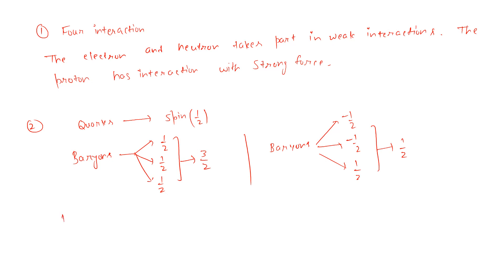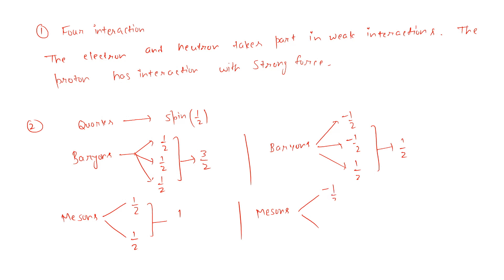For mesons, we know that a meson consists of two quarks. If one is an up quark with spin minus one-half and the other is an up quark with spin plus one-half, then the net spin of the meson will be zero.